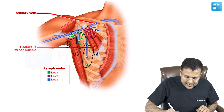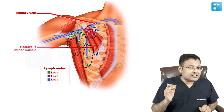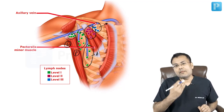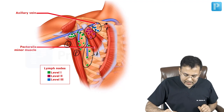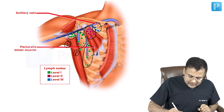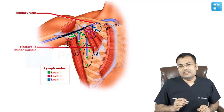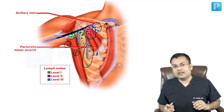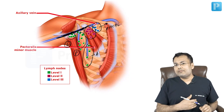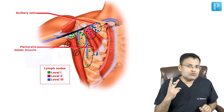Level 2 is located behind pectoralis minor and includes central and inter-pectoral nodes. Level 3 lymph nodes — the blue colored ones — are located medial and above; these are apical. In modified radical mastectomy, apart from removal of nipple areola skin, breast tissue, and breast mass, level 1 and level 2 lymph nodes are removed.